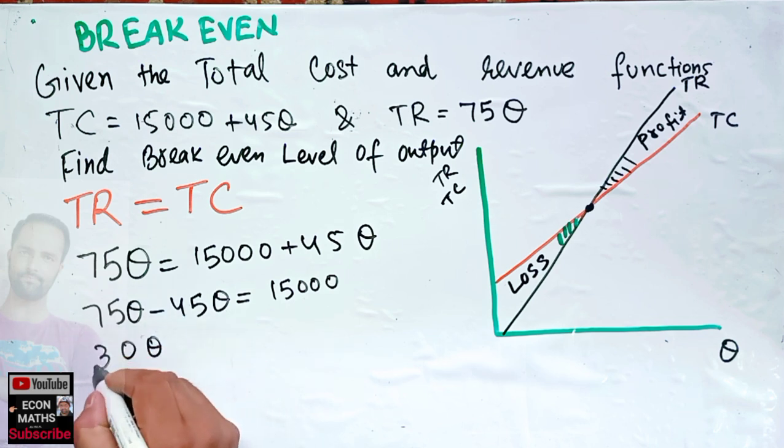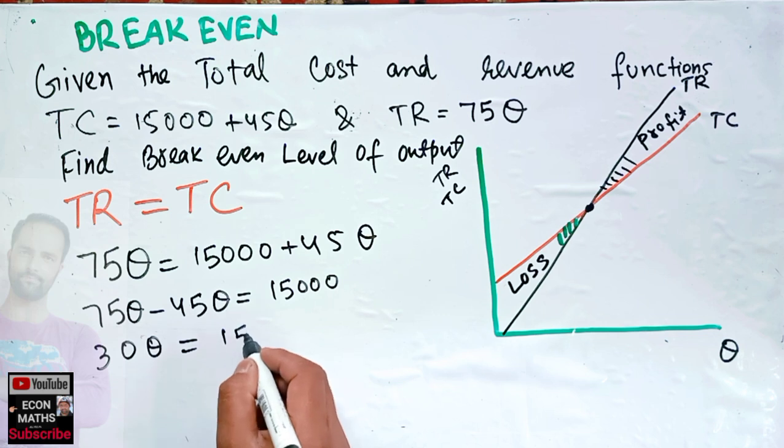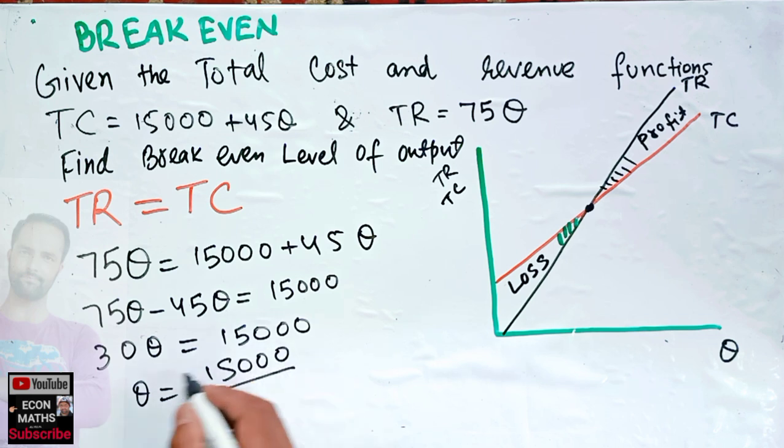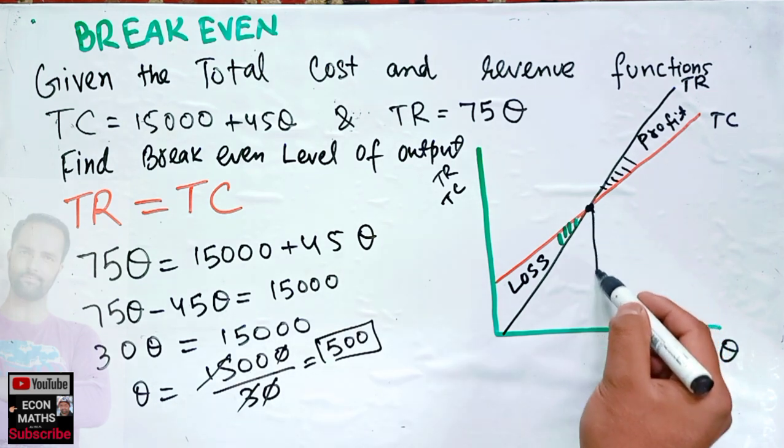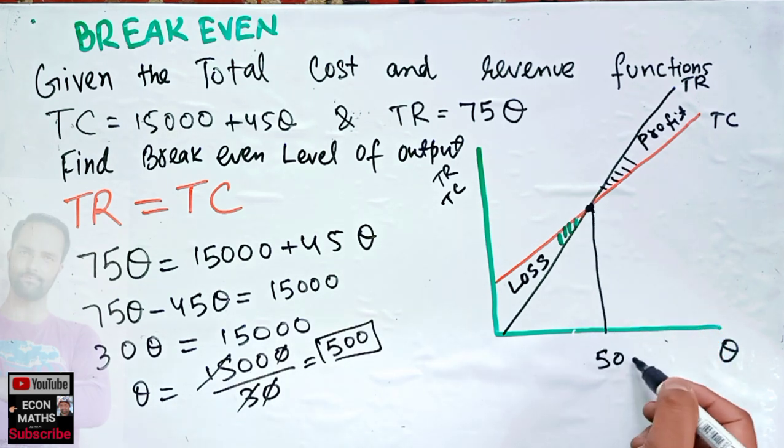Q will equal 15,000 divided by 30. This gets cancelled, we have 500. That means when output level is 500 we get the break-even point. So break-even level of output occurs when output is 500.